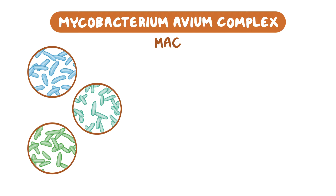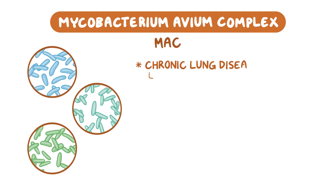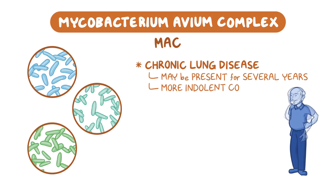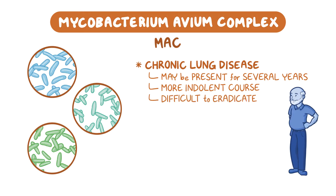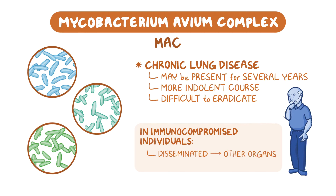MAC is very different from Mycobacterium tuberculosis. MAC lung infection is a chronic disease, often present for several years prior to diagnosis. It typically has a more indolent course and can be difficult to eradicate, with frequent recurrences after completing long courses of treatment. In addition, in immunocompromised individuals, MAC can become disseminated, affecting organs other than the lungs, and can cause lymphadenitis.